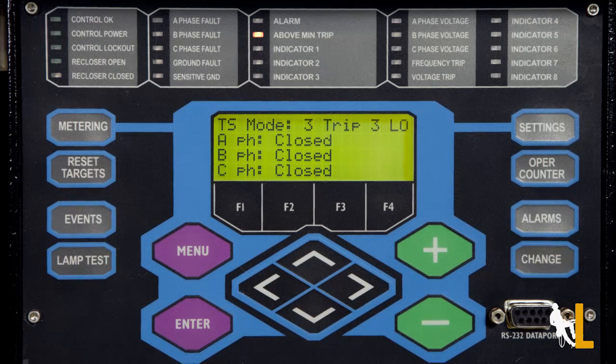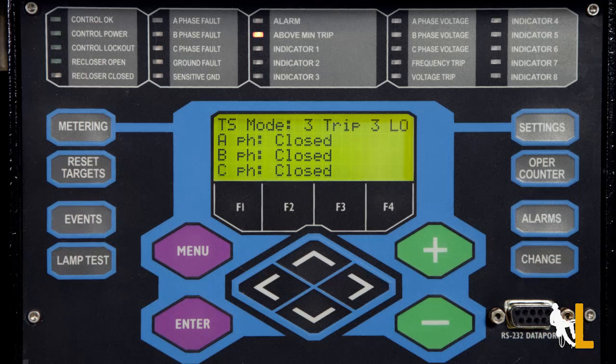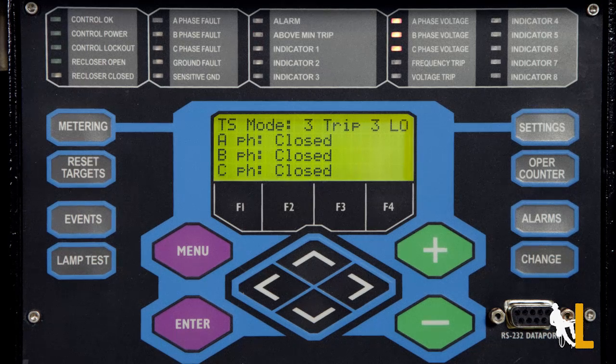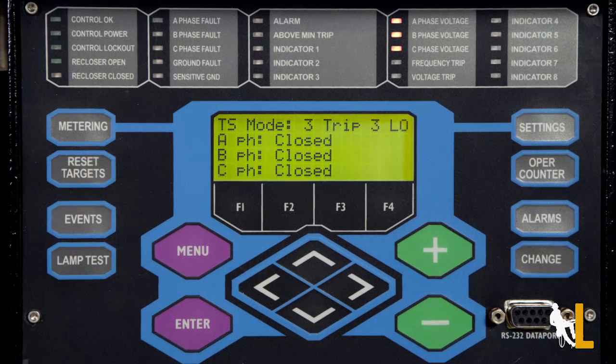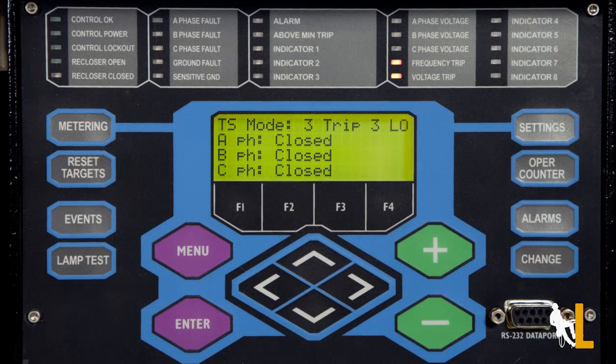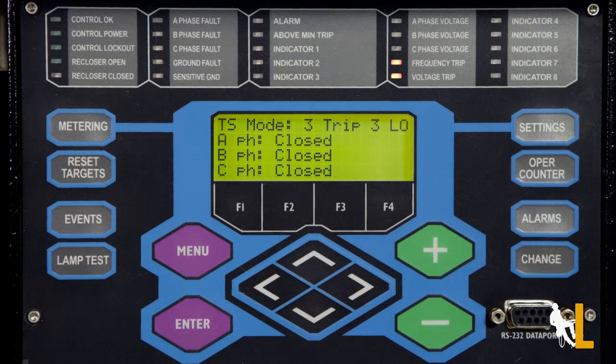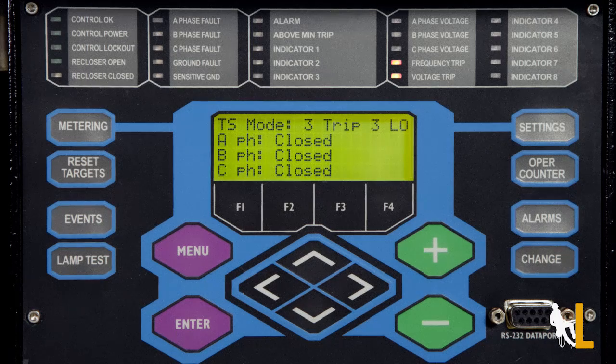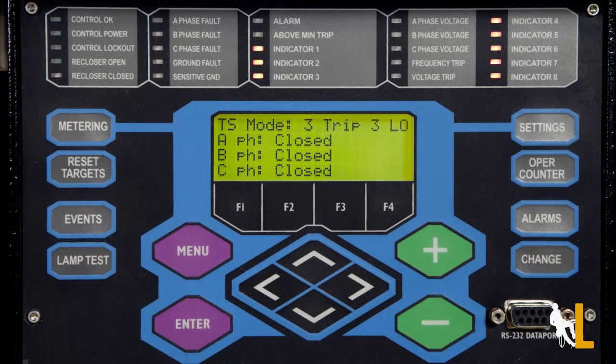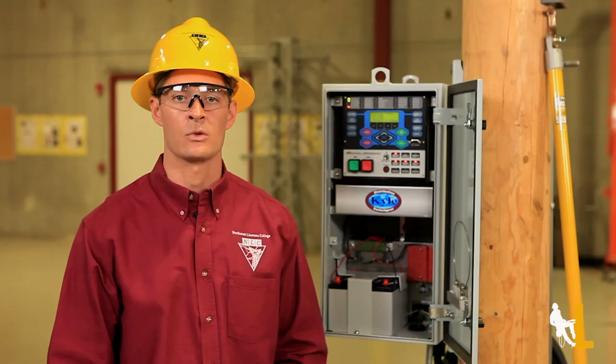Above minimum trip means that the current exceeds the level set for minimum trip. The phase voltage lights come on to indicate there is voltage on each phase. Voltage and frequency trip come on if the recloser trip due to high or low voltage or frequency. And finally, the indicator lights can be customized to come on in predetermined situations.